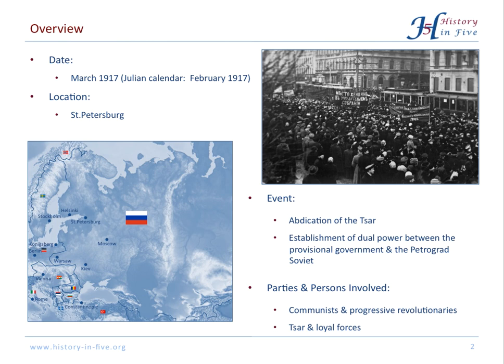It took place mainly in St. Petersburg, and in the end the Tsar abdicated and the dual power between the Provisional Government and the communist Petrograd Soviet was established.